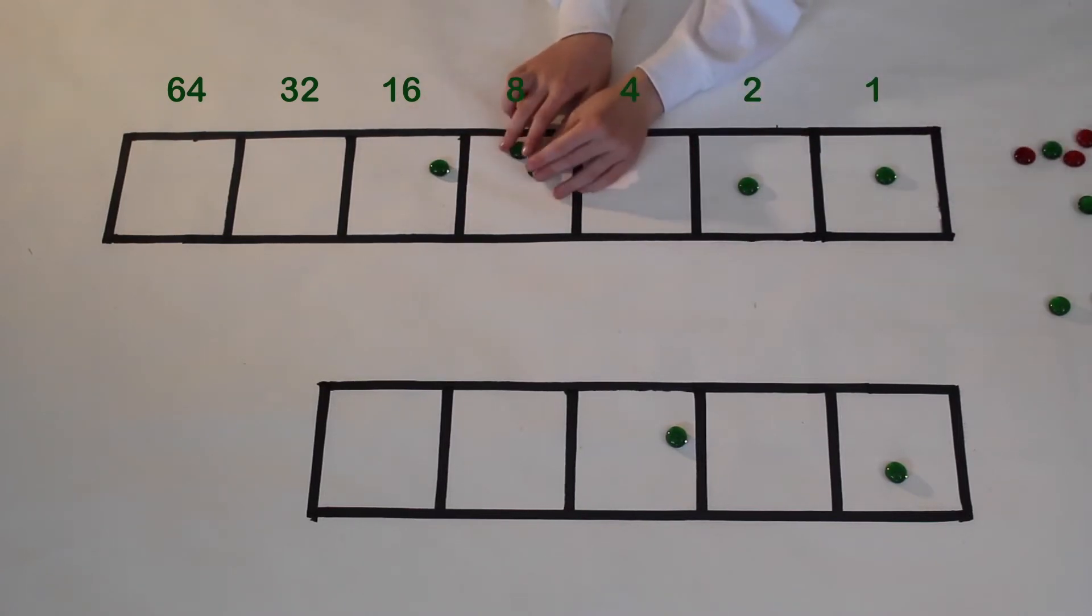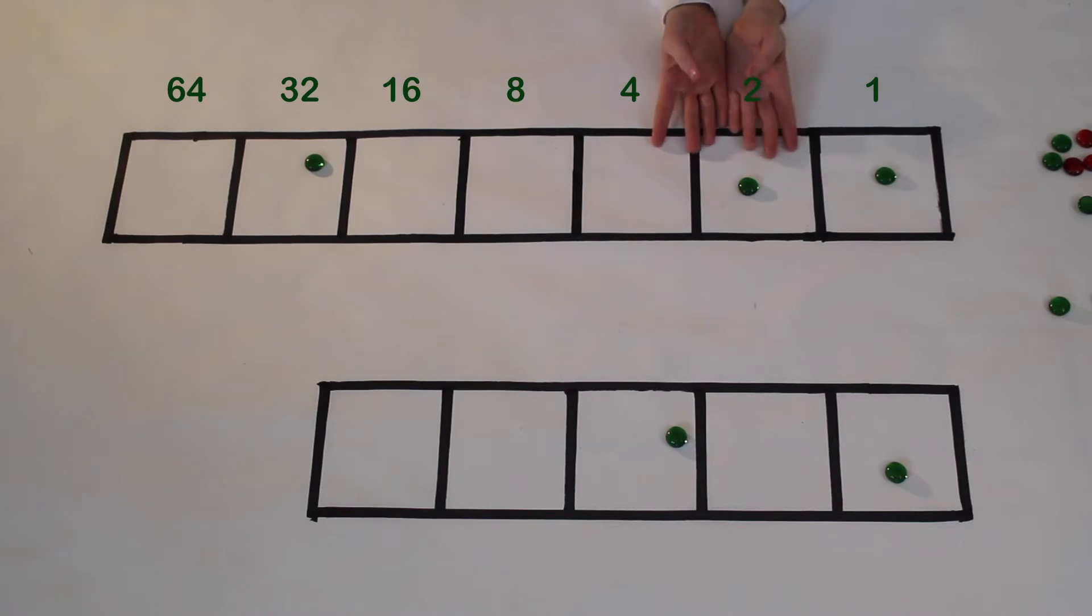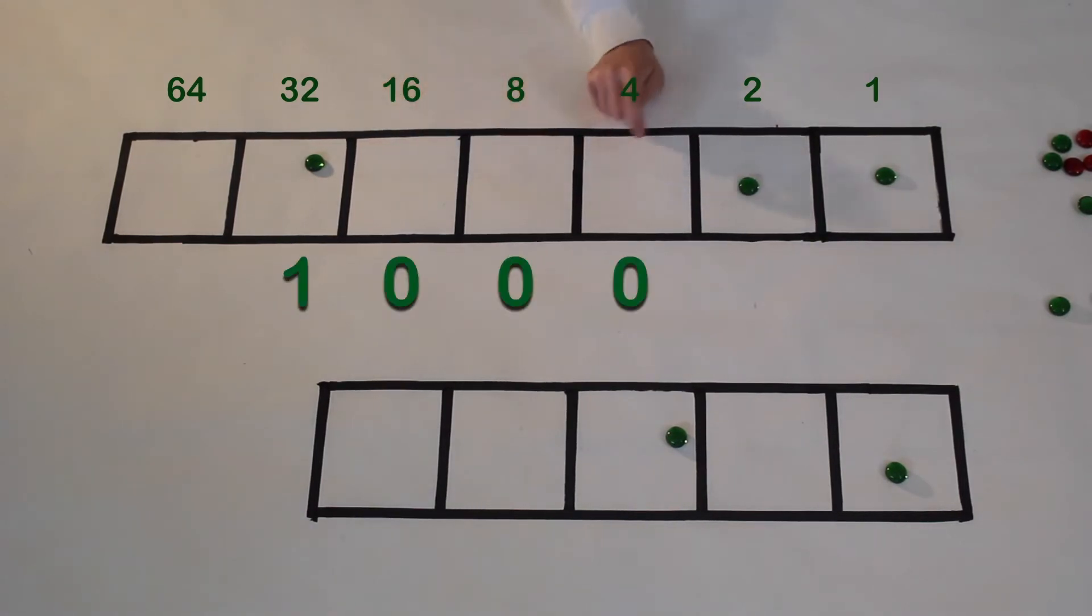And now we can use it on any boxes with more than one dot. 5 times 7 equals 1, 0, 0, 0, 1, 1. So we have 32 plus 2 plus 1. That's 35.